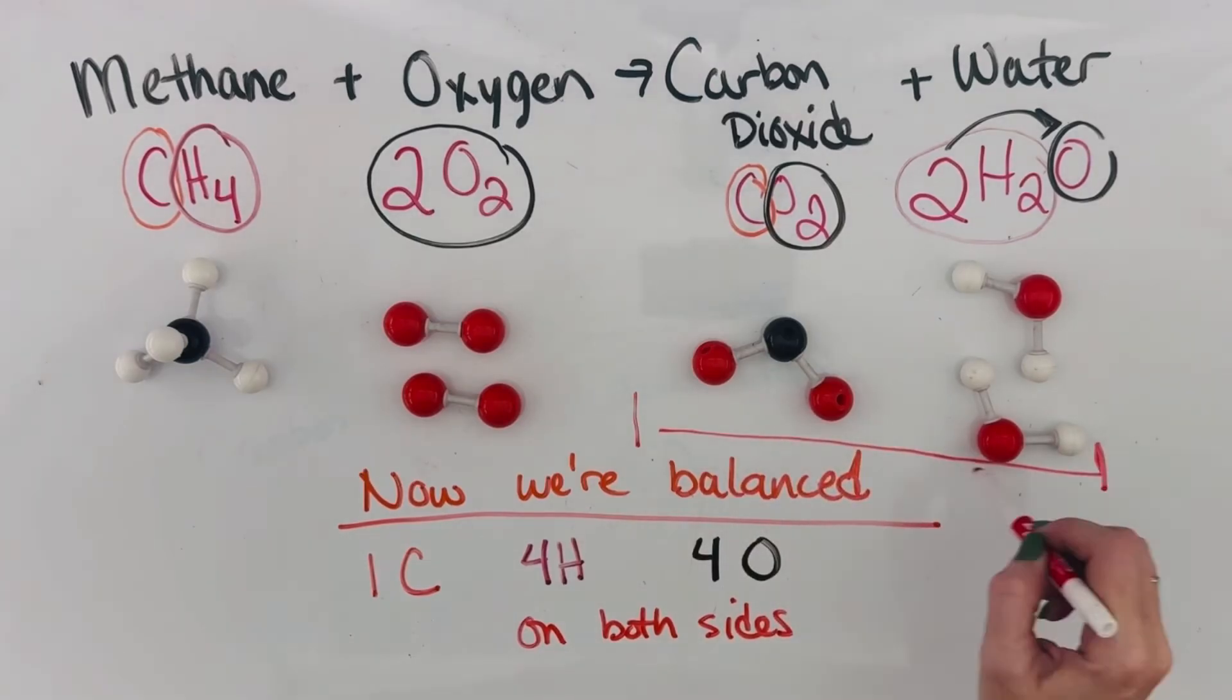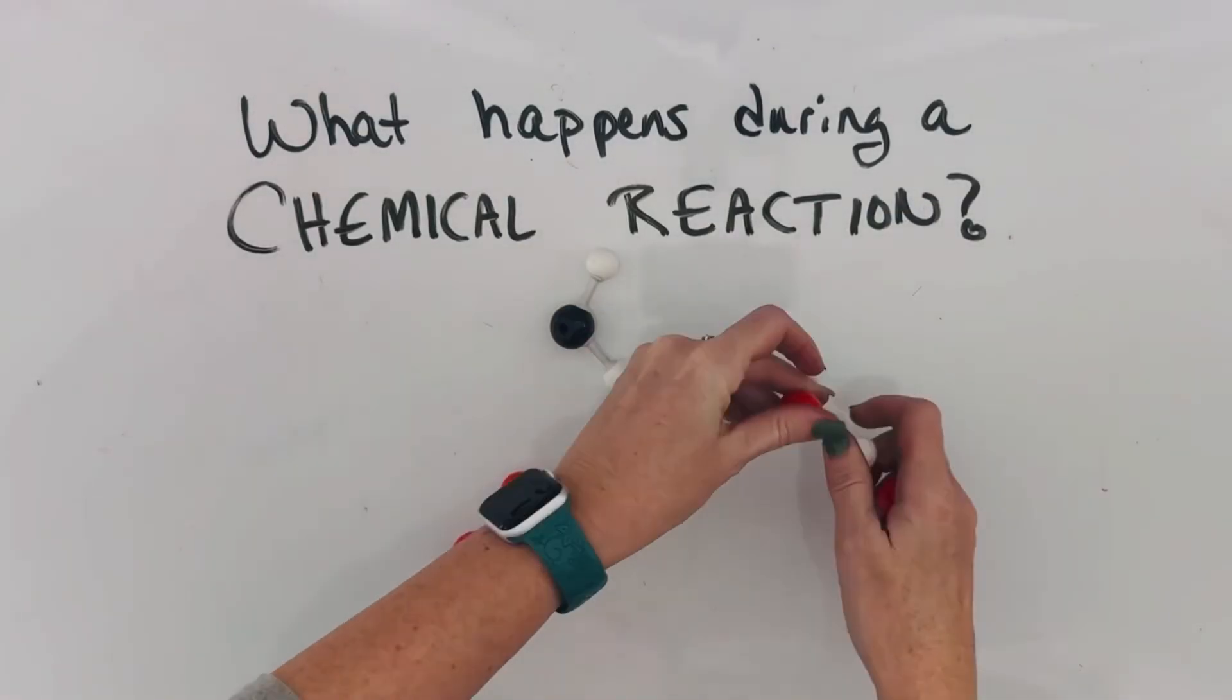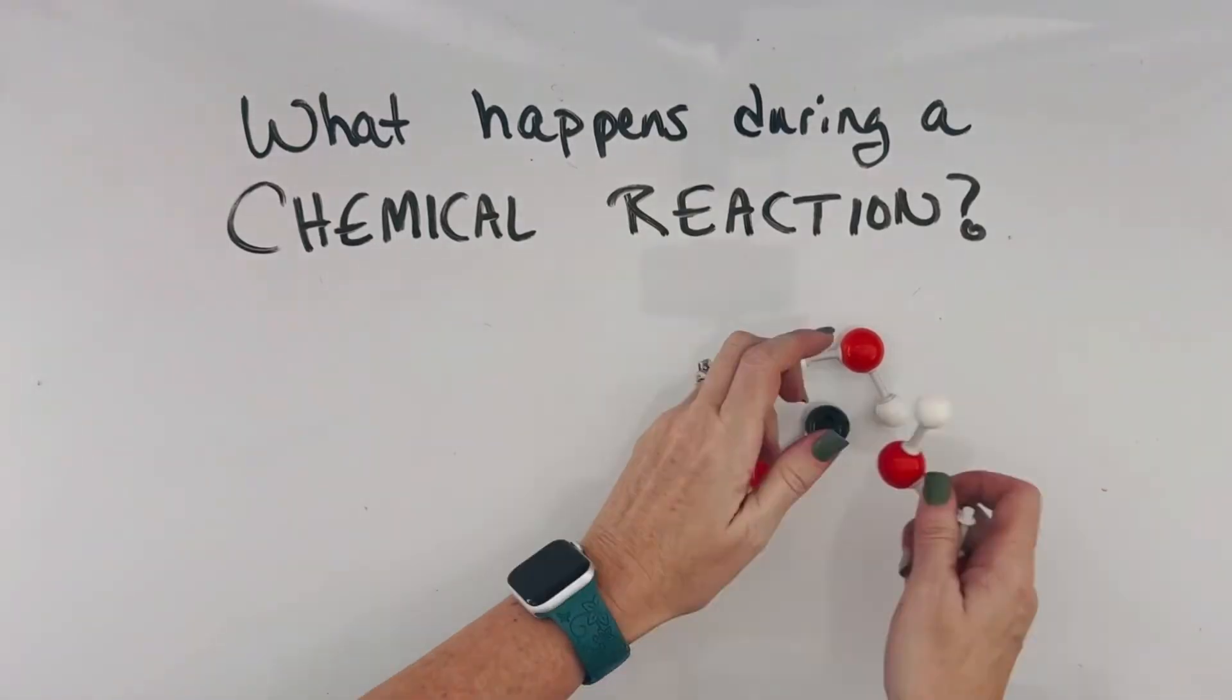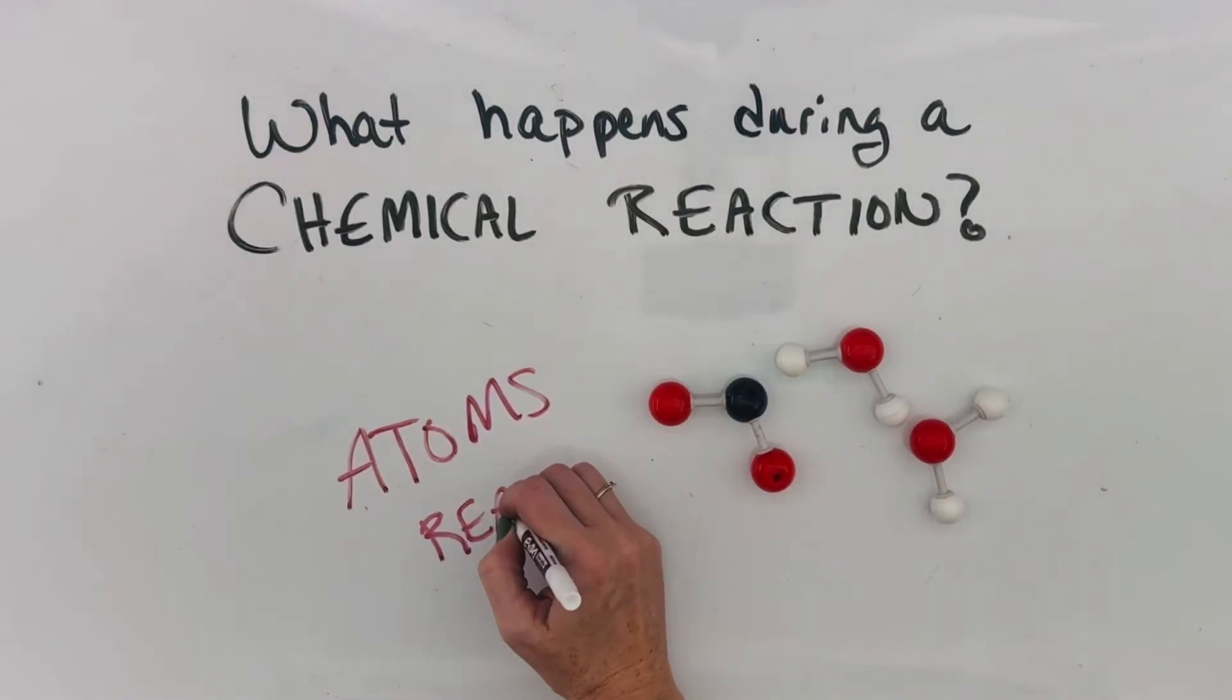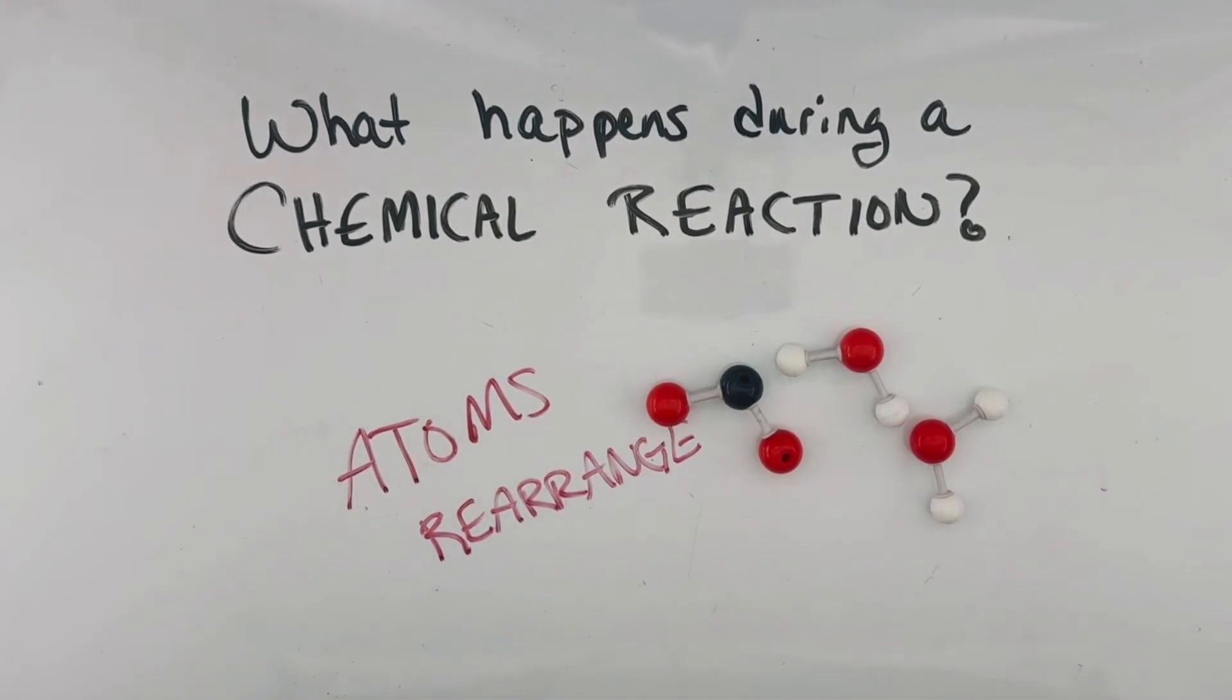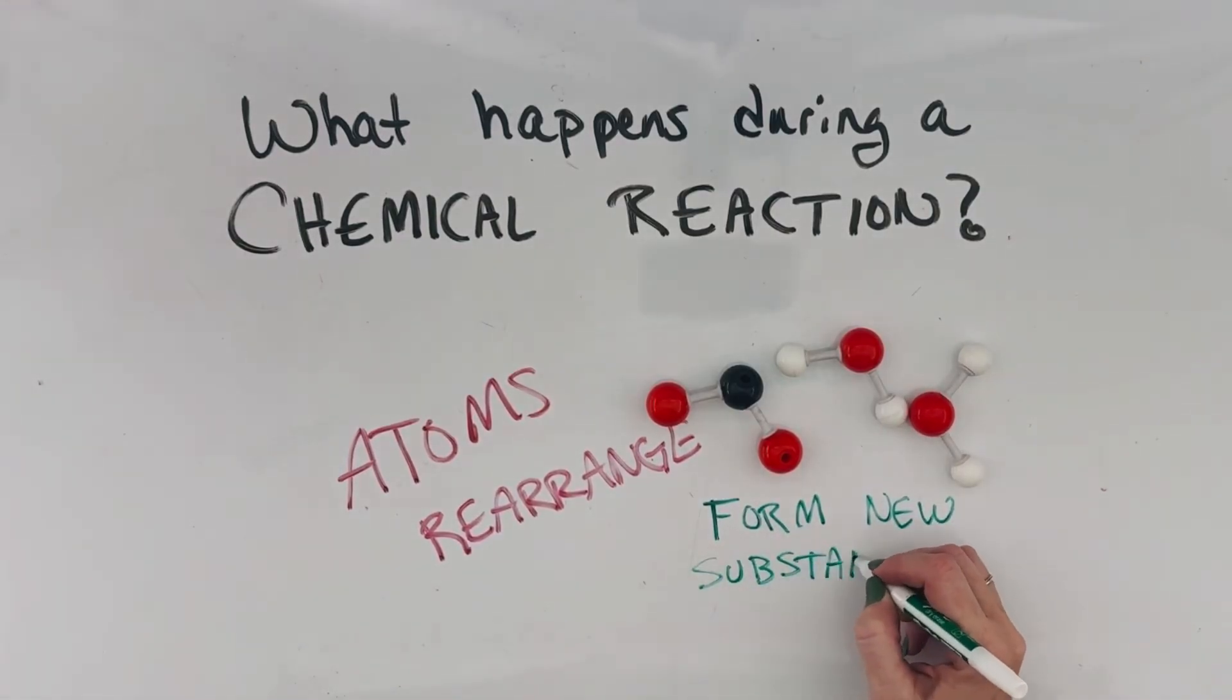And we've got the same number on both sides of our arrow. So what happens during a chemical reaction? That's right. Atoms rearrange and form new substances with new chemical compositions.